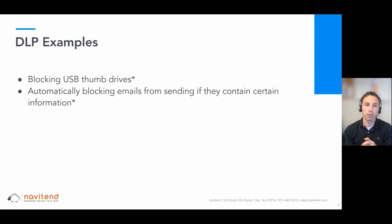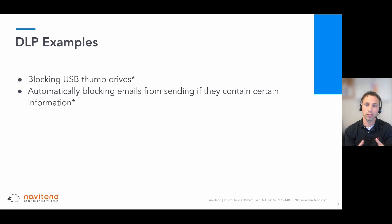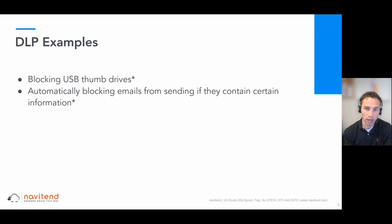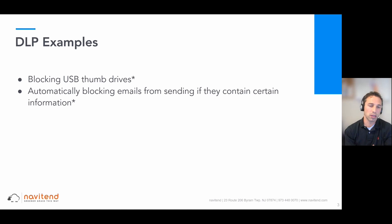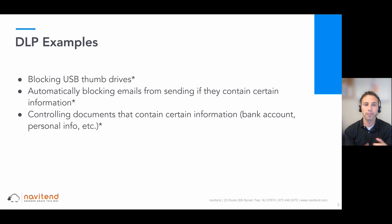Another example is that you might want to automatically block emails from sending if they contain certain information. So let's say I draft an email and I attach a Word doc, but I forgot that that Word doc includes some sensitive information. My DLP program could be configured to automatically detect that sensitive information and then block that email from sending.